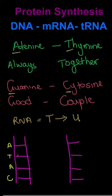Protein synthesis in 60 seconds. DNA is copied by mRNA, which is then copied by tRNA, which will carry a specific amino acid based on the type of nitrogenous base that it has. These will be linked in a specific sequence, which will then create a specific protein.